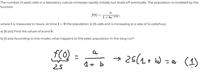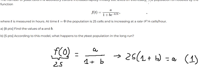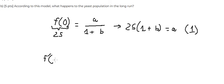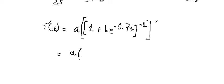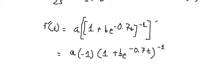So we have the first equation. Now we need to find the first derivative, f prime of t. If we do the first derivative of this one, we have negative one, and then one plus b times e to the power of negative 0.70.